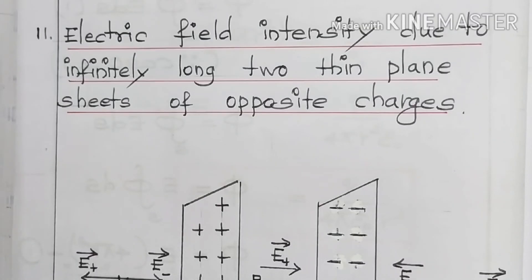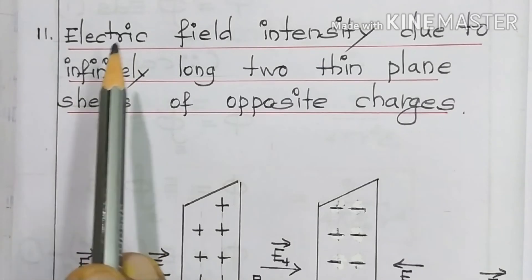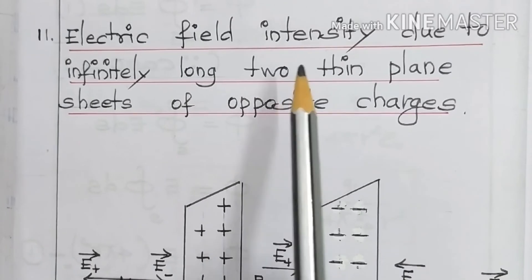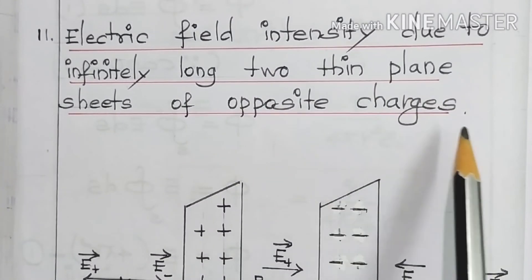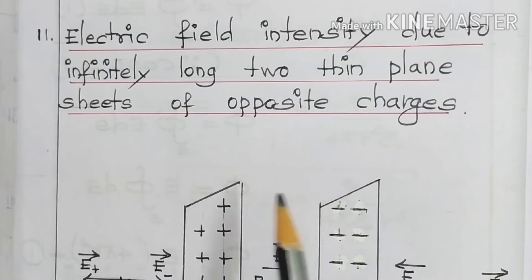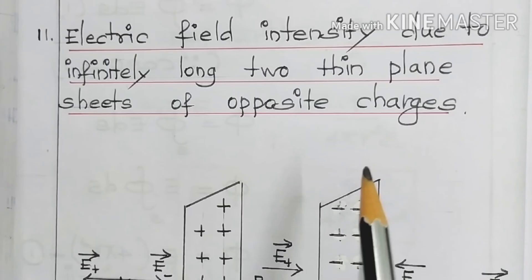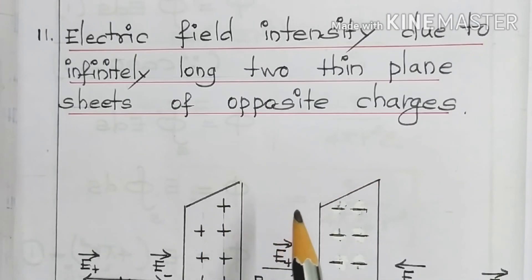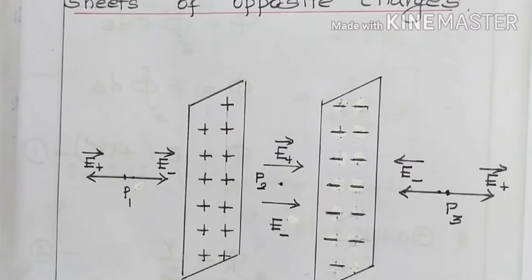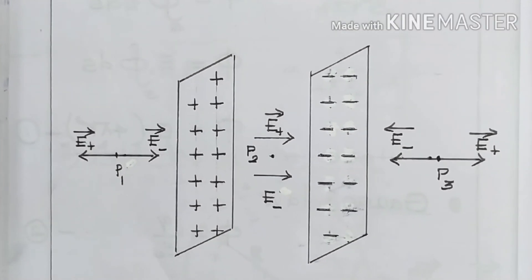Let us move on to the derivation: electric field intensity due to two infinitely long thin plane sheets of opposite charges. There are two thin plane sheets given — they are infinitely long and have opposite charges. We are going to find out the electric field intensity within these sheets and also outside them. Let us have a close look at the diagram to get a clear idea.